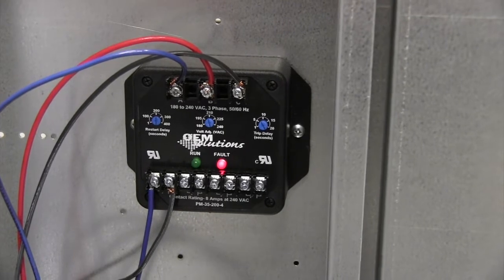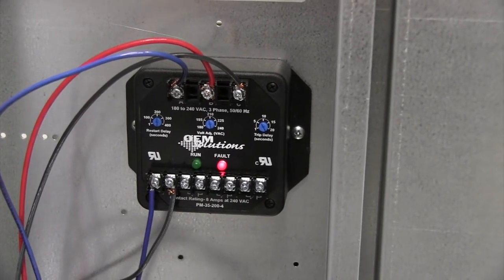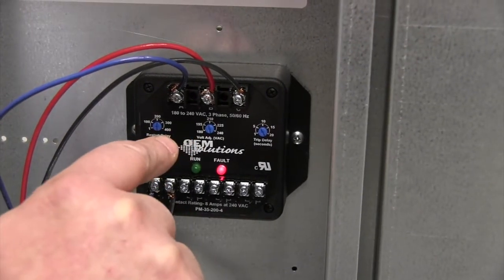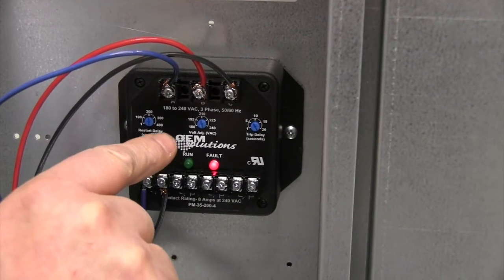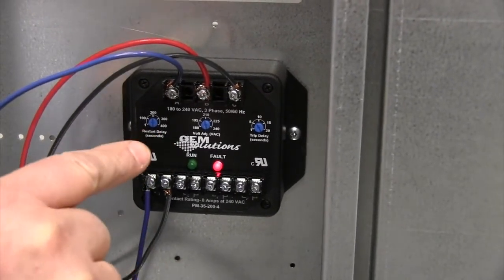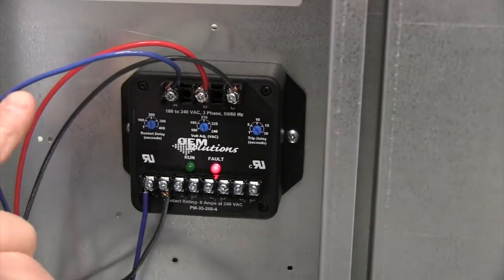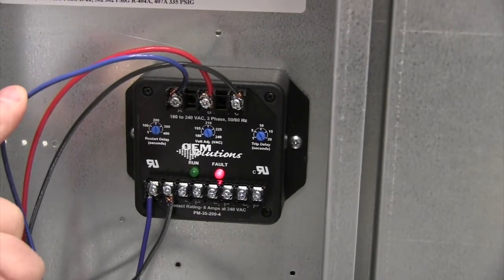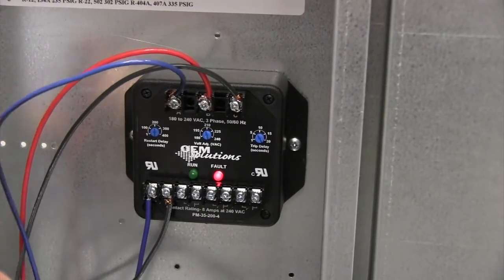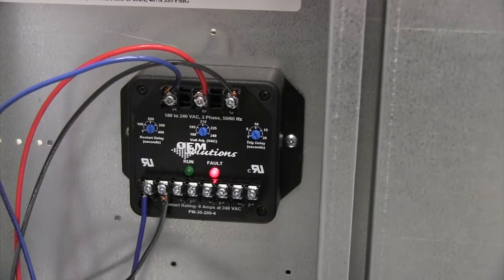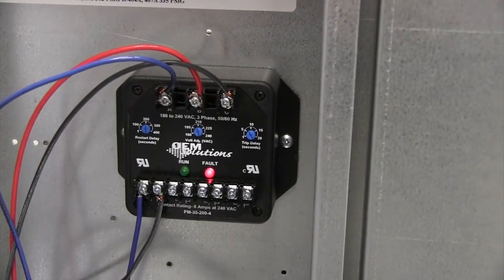There are three adjustment settings on the phase monitor. The center adjustment is for adjusting the voltage set point. That should be set per the dial to the incoming voltage, which we measured at approximately 210 volts, and we have that set on 210 volts, so that's okay.